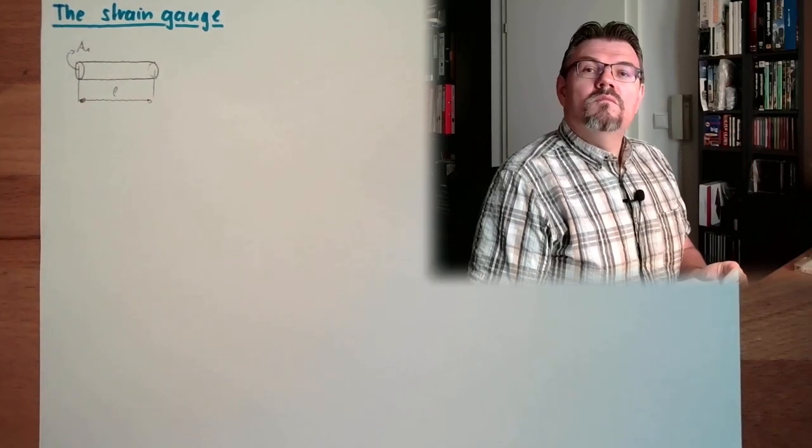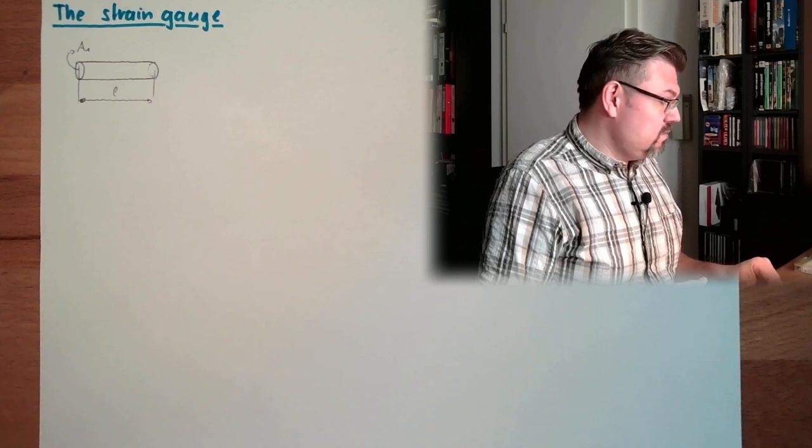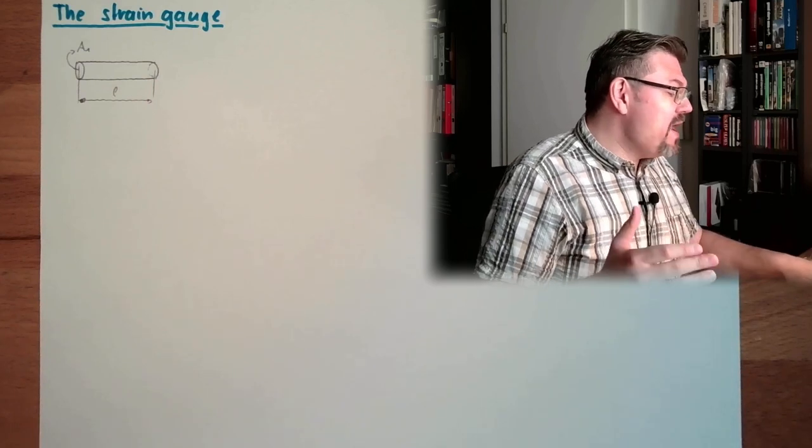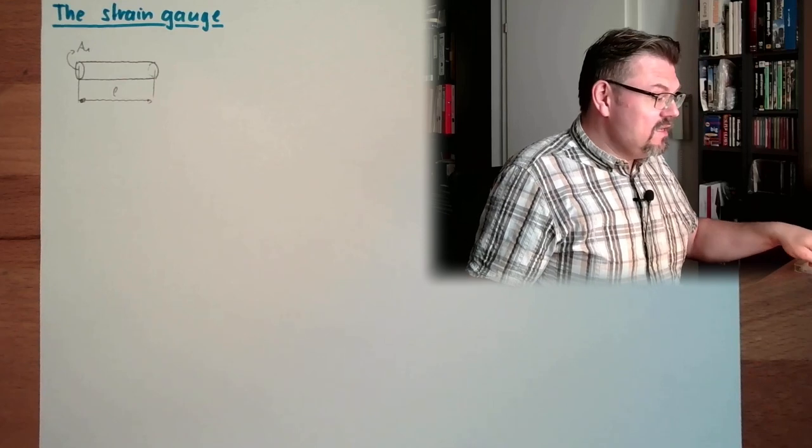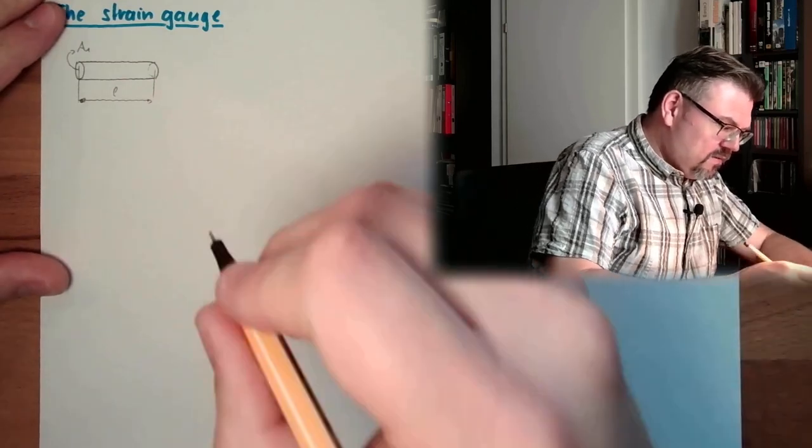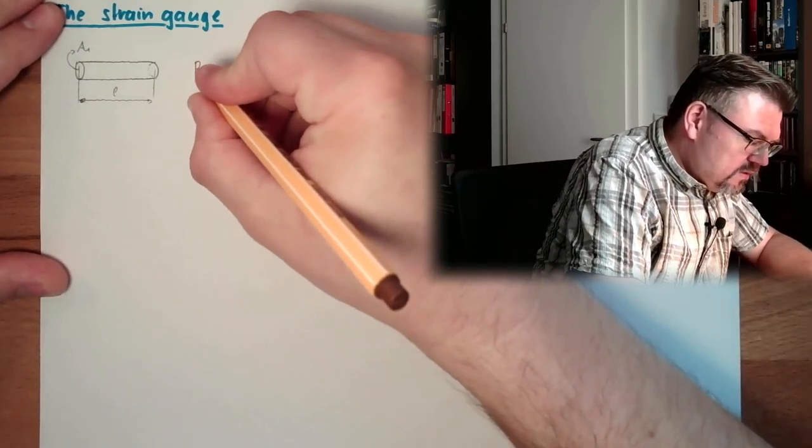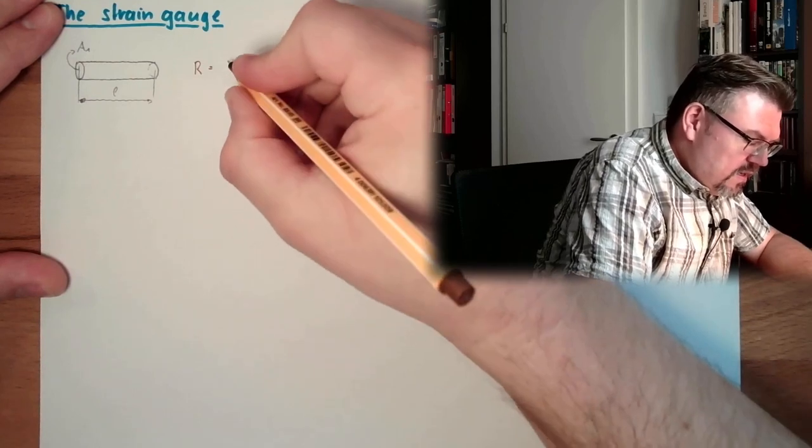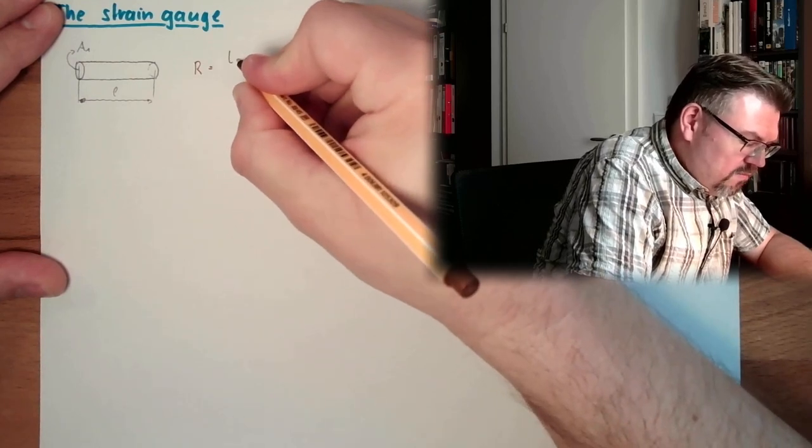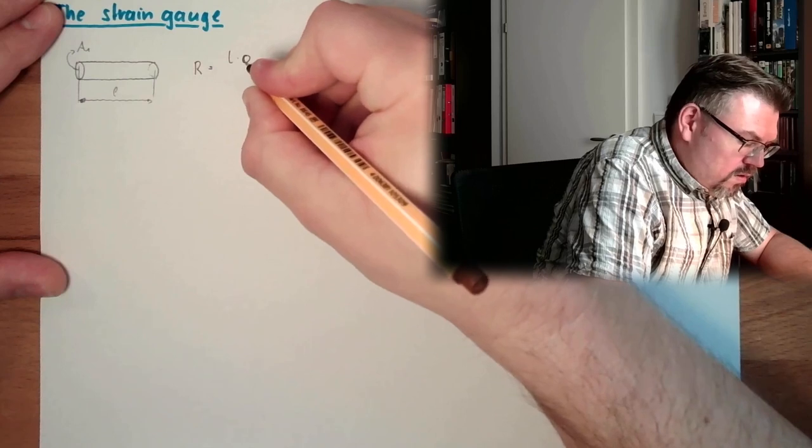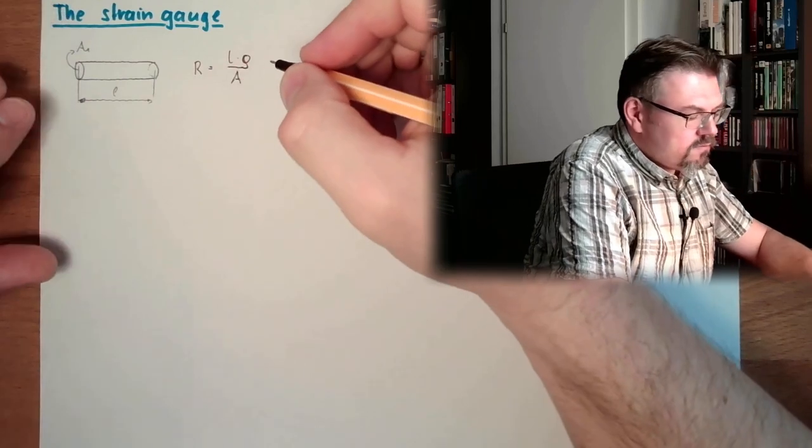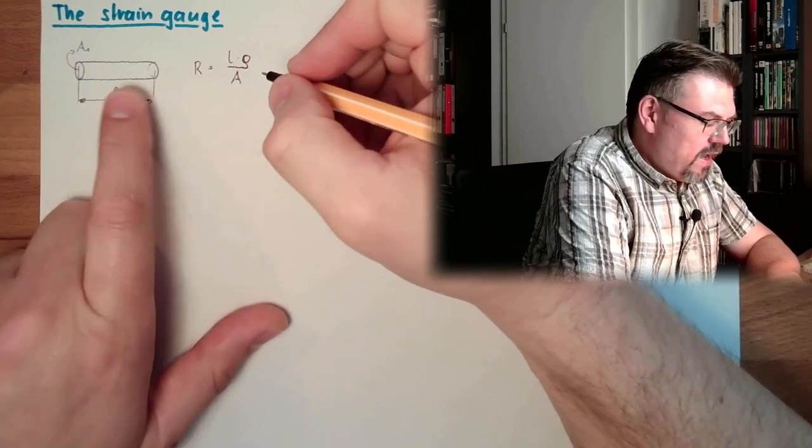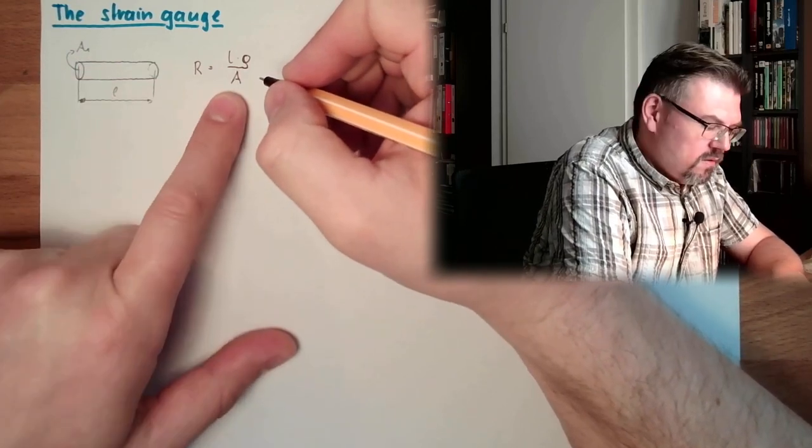This has some resistance, electrical resistance, depending on the material we are working with. And this resistance is L multiplied by rho divided by A. L is the length, A is the area.